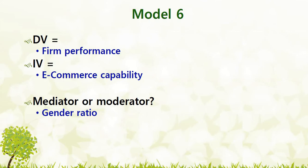So the simple conclusion drawn from all this discussion is that if a variable has a causal relationship with the IV as well as with the DV, then it would be treated as a mediator. But if it is not having any causal relationship with the IV, then it would certainly act as a moderator. Thank you for watching.